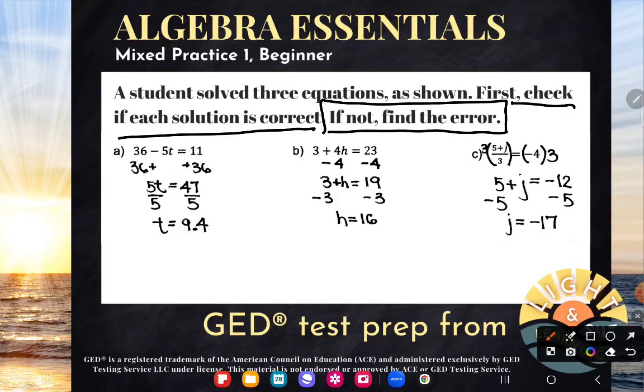And it's all about understanding what this means here. If I say T equals 9.4, what am I saying? I'm saying that if you take this number and put it up here where T was, you plug it in for T, it's going to give me a true equation. Meaning the left hand side will equal the right hand side of the equation.